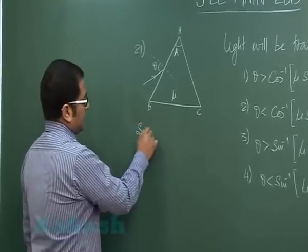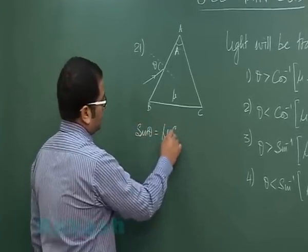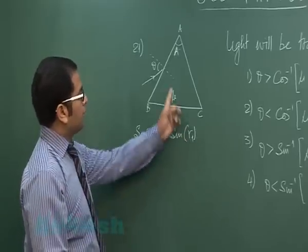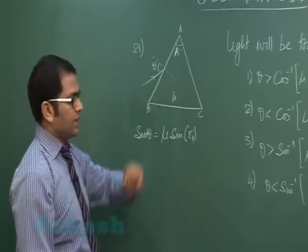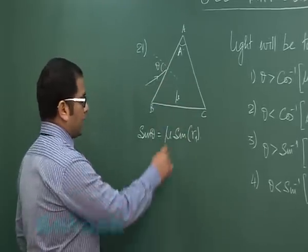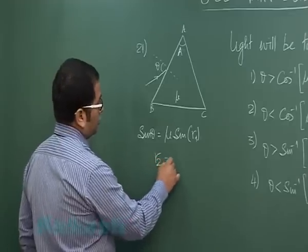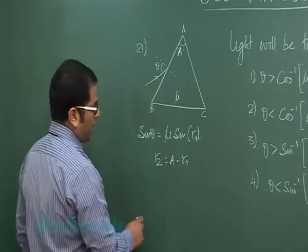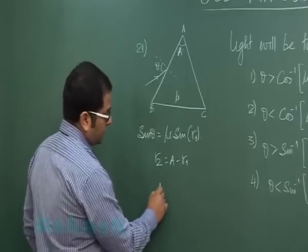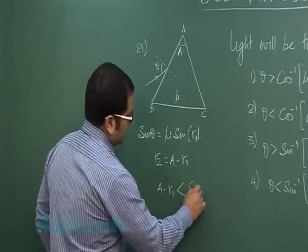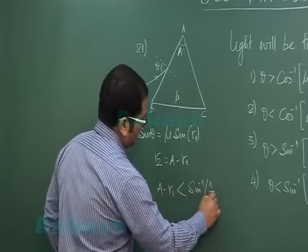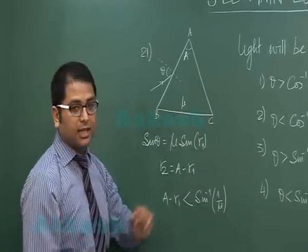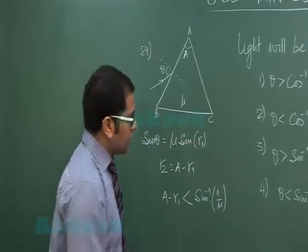The first thing says sine theta is mu sine R1, so that will give me angle of refraction in this phase. Once I know R1, I can find R2 which is A minus R1. The condition required is R2, which is A minus R1, should be less than sine inverse 1 by mu, so that the angle of incidence here is less than the critical angle.